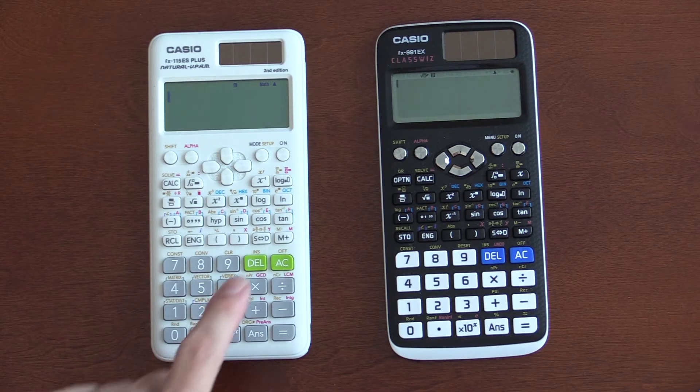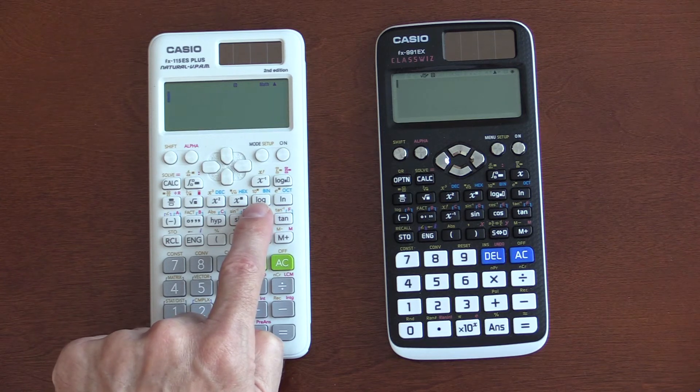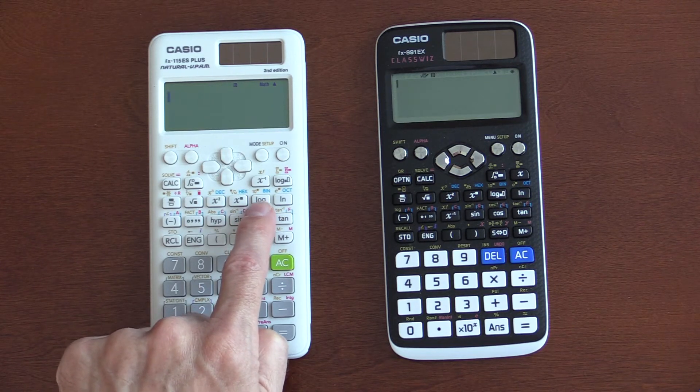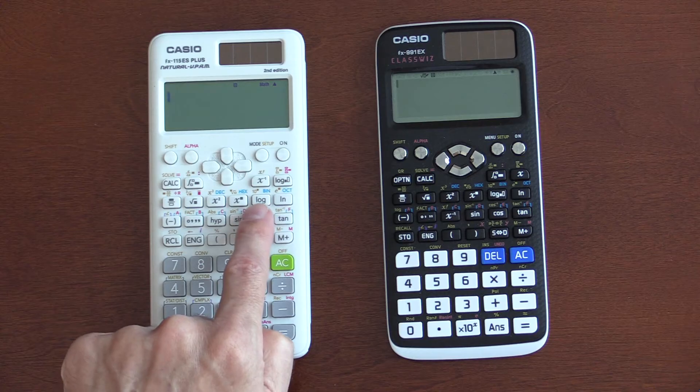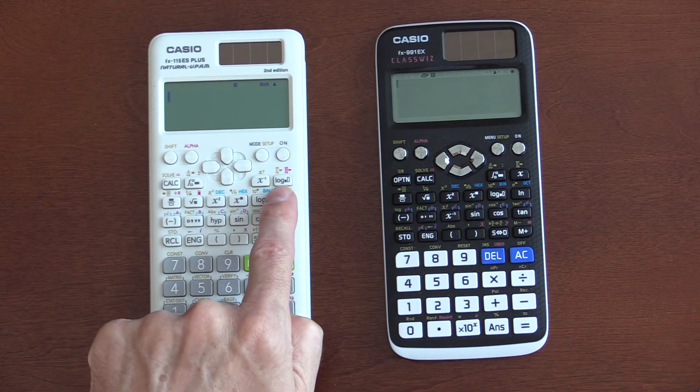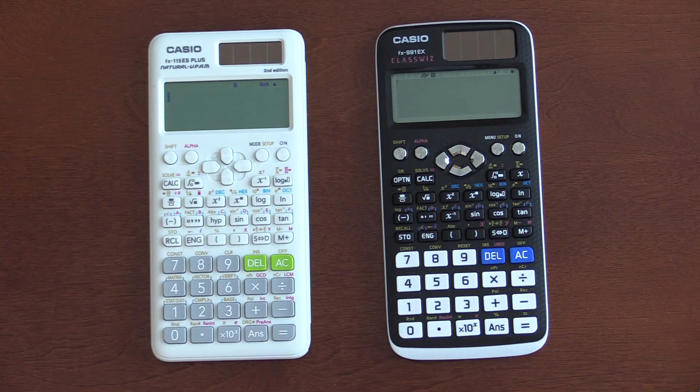I like on the ES that the log function, log base 10, is not shifted. It's just got its own dedicated key. Especially for high school students, it makes it easier. Here's log base 10, here's natural log, and then if you have a different base log, it's right here and has a dedicated key. I like that.